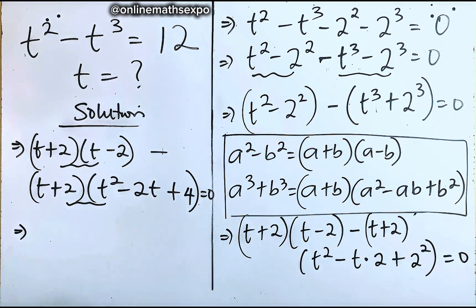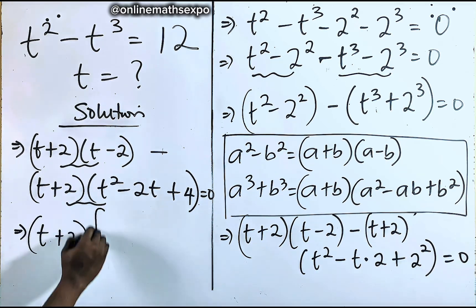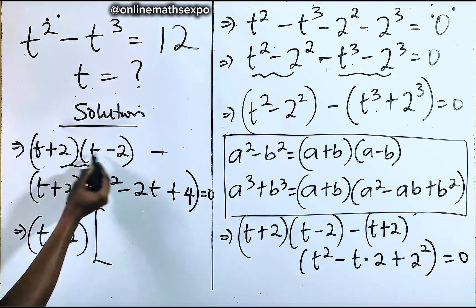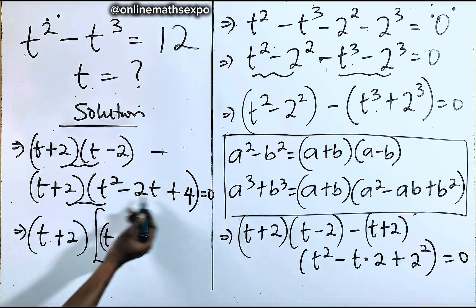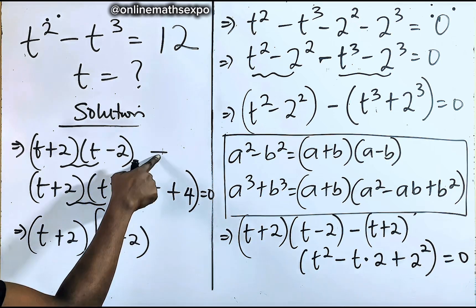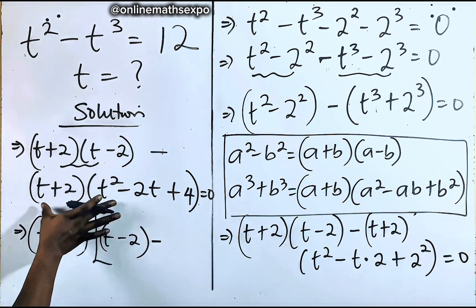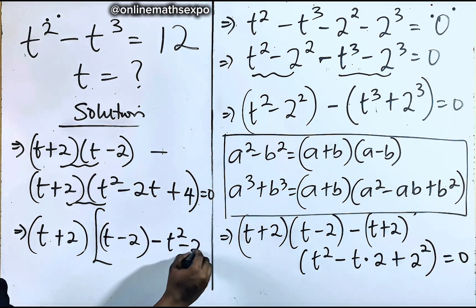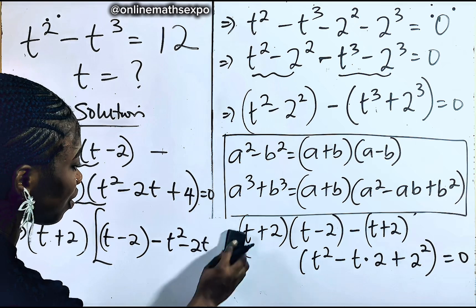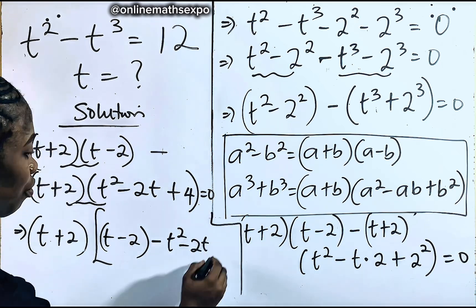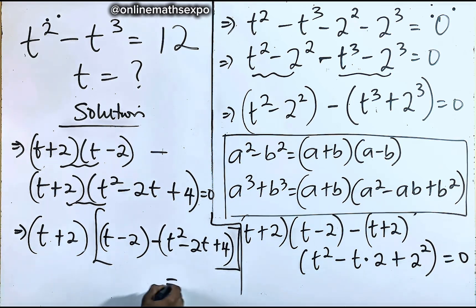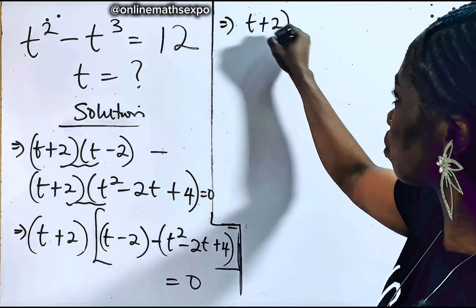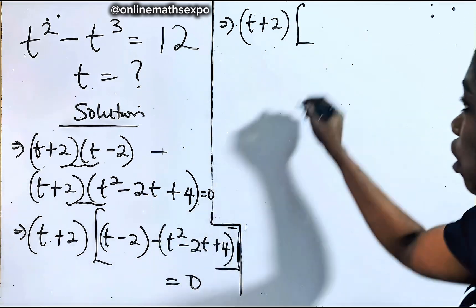Factoring out (t + 2), we divide each group by it. From the first group we get (t − 2), and from the second group we get (t squared minus 2t plus 4), with a subtraction sign between them. So we have (t + 2)[(t − 2) − (t squared minus 2t plus 4)] equals 0.